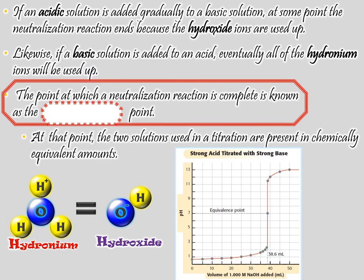What if we did this in a very controlled way — adding them gradually until they neutralize each other at what we call the equivalence point? At the equivalence point, you have the same number — the same concentration — of hydronium and hydroxide. They knock each other all the way down to nothing.